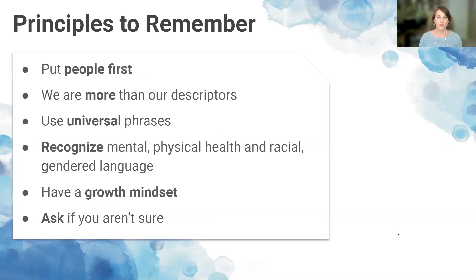Principles to remember: People-first language focuses on the person, not their characteristics. Instead of saying 'a blind woman' or 'a woman salesperson,' use 'a woman who is blind' or 'a woman on the sales team.' We are more than our descriptors. Only include characteristics like gender, sexual orientation, religion, racial group, or ability when relevant to the content. Also use universal phrases — idioms, industry jargon, and acronyms can be exclusive of anyone without specialized knowledge of a subject.